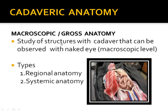Gross anatomy is also known as cadaveric anatomy or macroscopic anatomy. It is the study of structure using a cadaver — cadaver means dead body. It can be observed with the naked eye, so it is called gross anatomy. It is studied at the macroscopic level, not with a microscope.